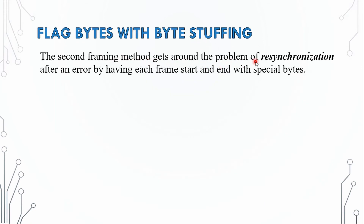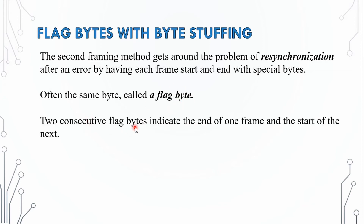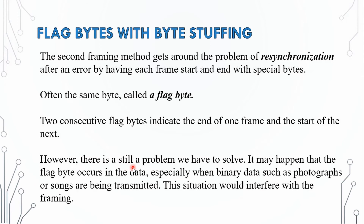The second framing method gets around the problem of resynchronization after an error by having each frame start and end with special bytes. The same byte is called a flag byte. Two consecutive flag bytes indicate the end of one frame and the start of the next. However, there is still a problem: it may happen that the flag byte occurs in the data, especially when binary data such as photographs or songs are being transmitted. This situation would interfere with the framing.